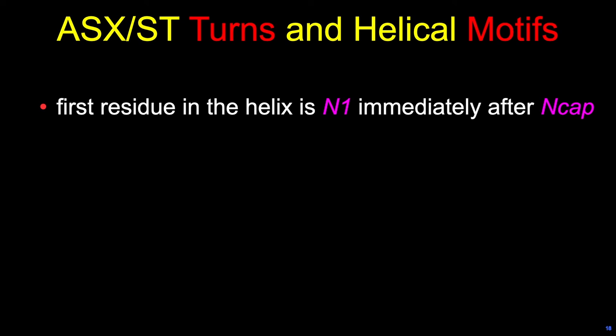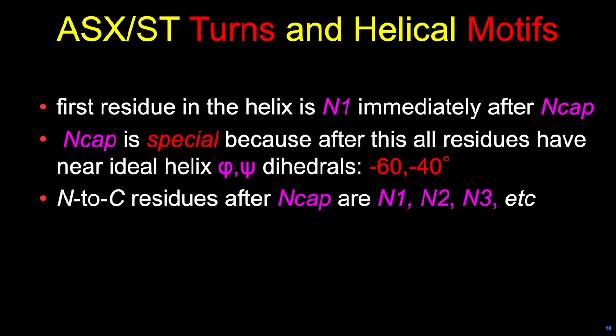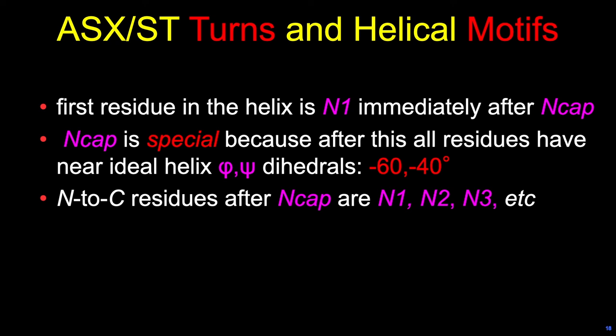To summarize: the first residue in a helical ASX motif is N1. The N-cap is very special because after this, all the residues have phi-psi dihedrals in the ideal helical range. From N to C, the residues are numbered N1, N2, N3. ASX motifs have two hydrogen bonds; turns have only one.